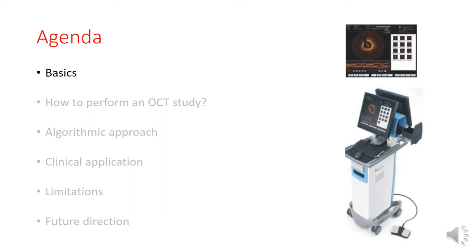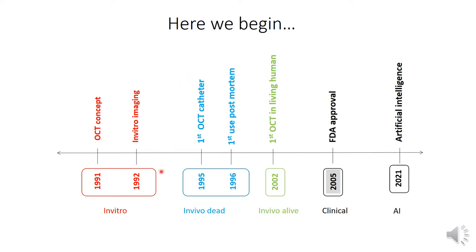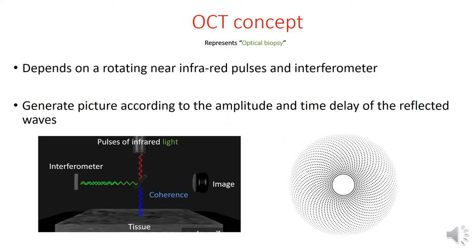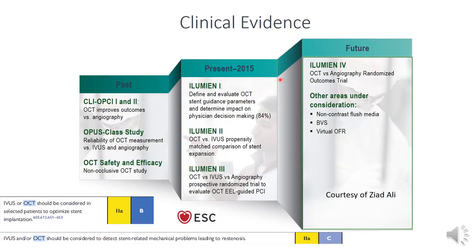We'll start with quick basics about OCT. The OCT technology dates back to early 1991 at MIT, and it was a long journey until FDA approval in 2005. OCT represents optical biopsy. It depends on rotating near-infrared pulses received using what is called an interferometer, then generates a picture according to the amplitude and time delay of the reflected waves. We have accumulative evidence behind OCT: it qualifies class 2a, level of evidence C for stent optimization, and also class 2a for treatment of stent failure per the latest ACC guidelines for revascularization.